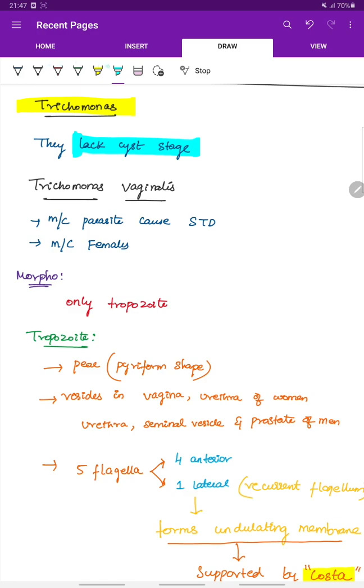The most important species of Trichomonas is Trichomonas vaginalis. This is the most common parasite causing sexually transmitted disease and the disease is more common in females.